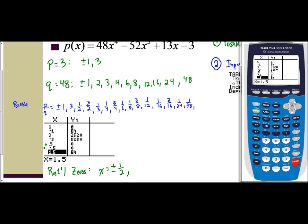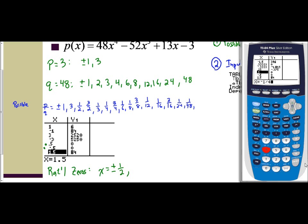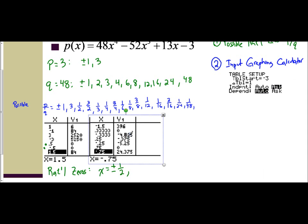So my actual rational zeros — two of them I found right away: x equals 1 half and negative 1 half, so plus or minus 1 half. Now we go back to our calculator. I like to leave them as is because this tells me the last value I used was 3 halves. So I have to use negative 3 halves, then 1 third and negative 1 third, 1 fourth and negative 1 fourth, and then 3 fourths and negative 3 fourths. I see two more y values of 0 — one occurring at 1 third and one occurring at 3 fourths. So I also have 1 third and 3 fourths.